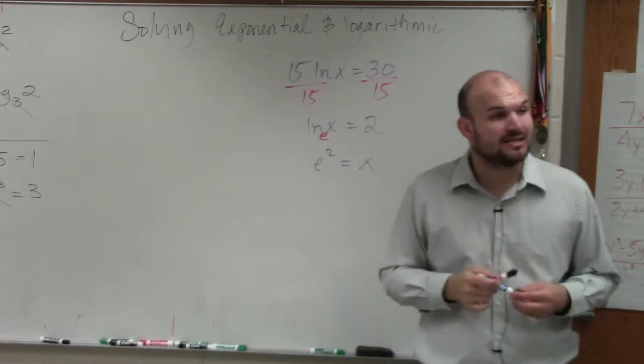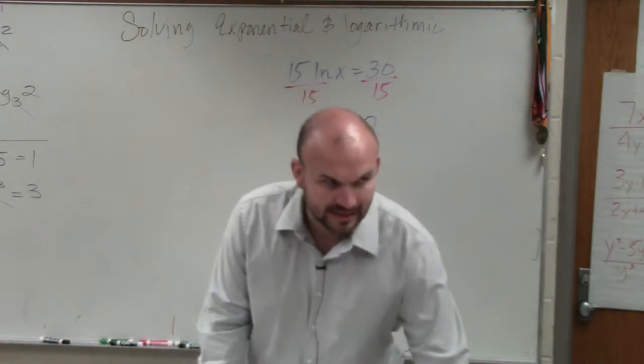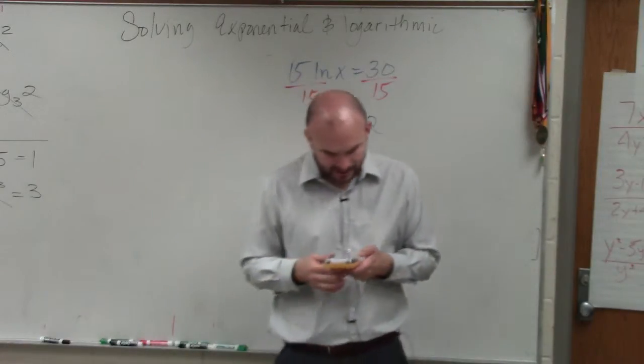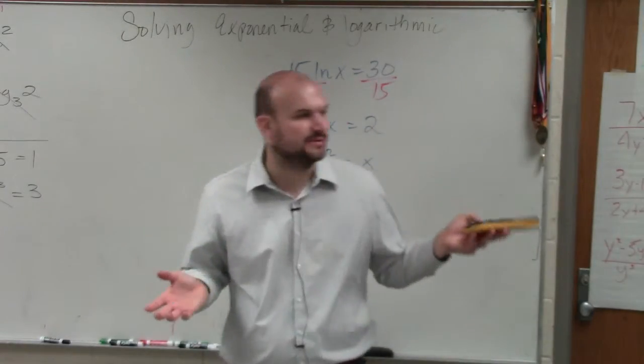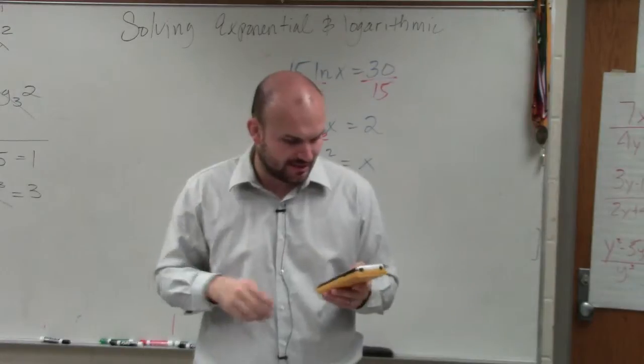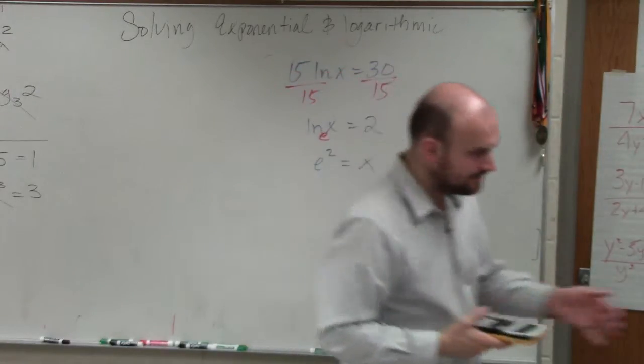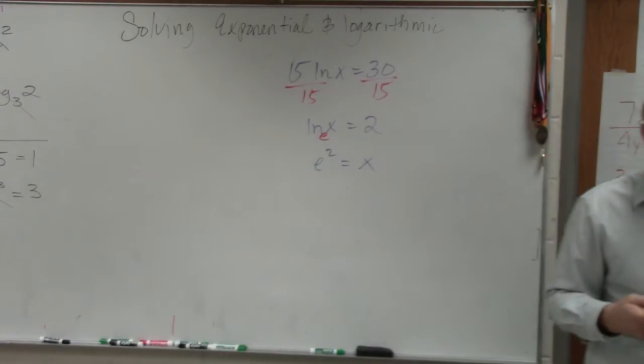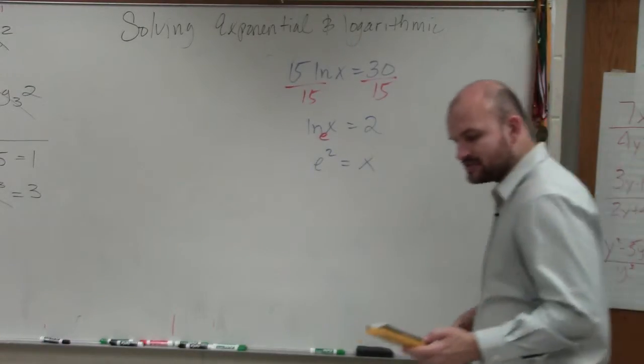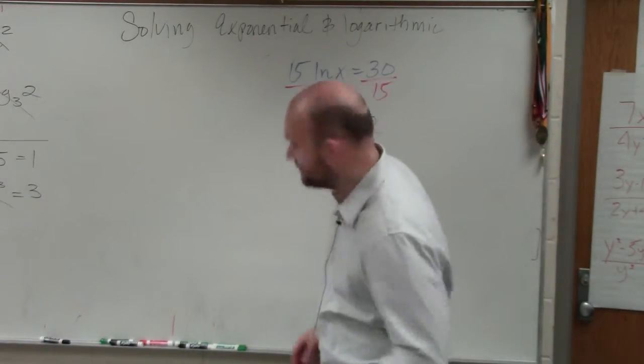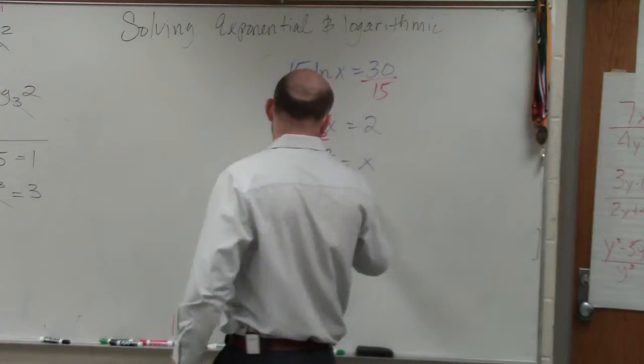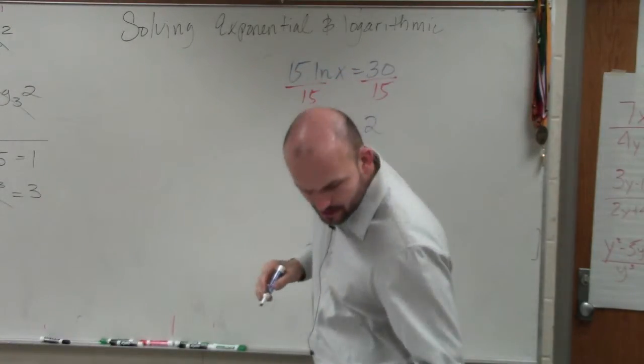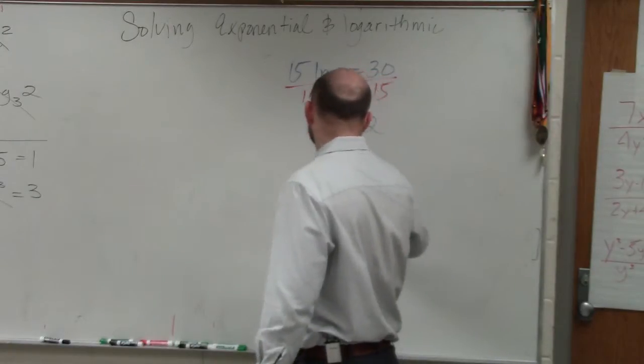Now, all I need to do is calculate e squared. You're going to have to go to your scientific calculator. There should be an e raised to an x power or e raised to a carat. I'll take e raised to the second power, which equals 7.38. When I round that, x equals 7.39.